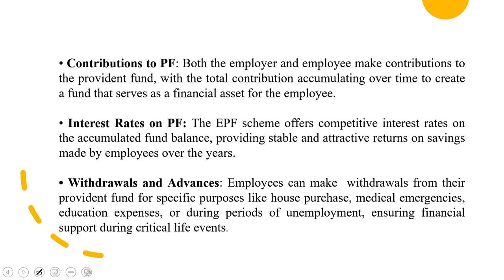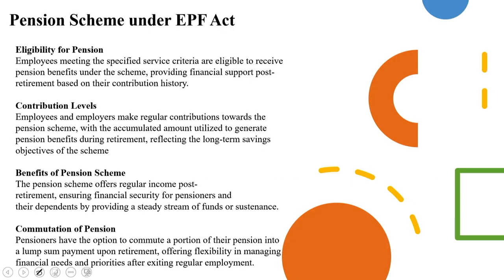Contributions come from both sides, with interest rates on the higher side. Withdrawals and advances are possible — employers can make withdrawals from the Provident Fund for specific purposes such as house purchase, medical emergencies, educational expenses, or during periods of unemployment, ensuring financial support during critical life events. There is also a pension scheme elaborated by EPS, which came up as an amendment in 1995.